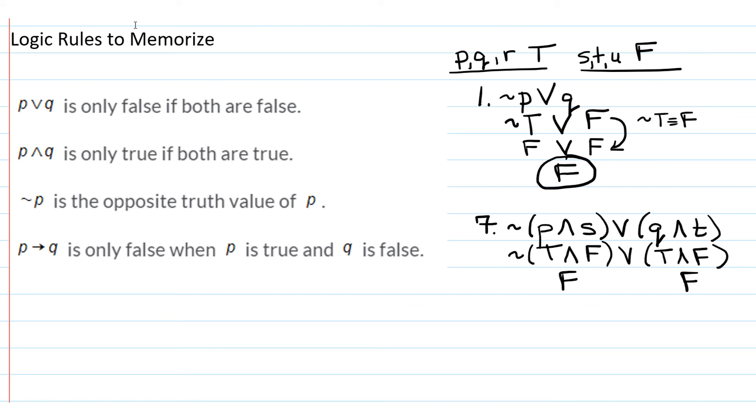Now copy down the rest of the symbols. We don't have the parentheses anymore because we've done what's inside of the parentheses. So we just have negation of false, then an or symbol, and then a false.